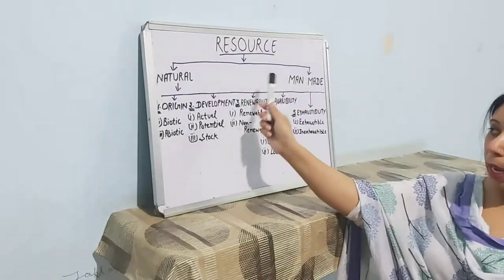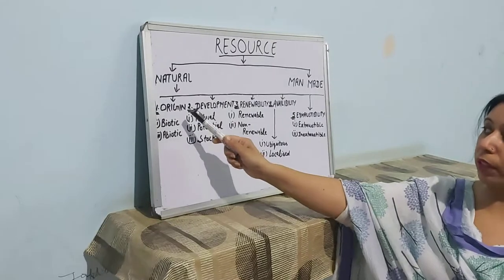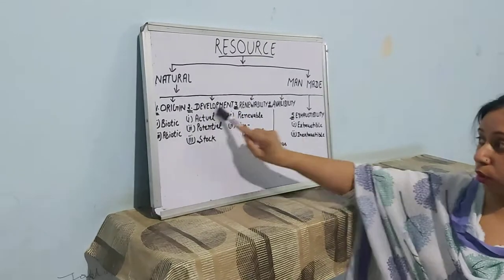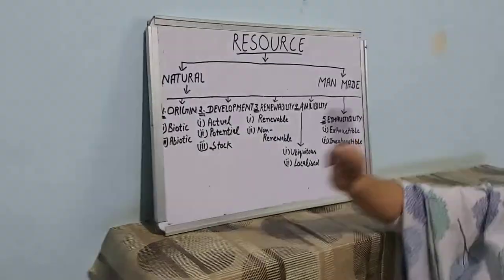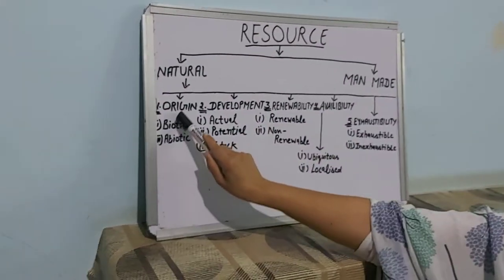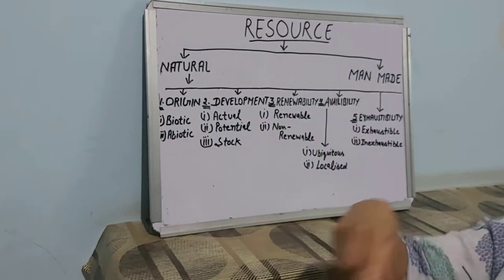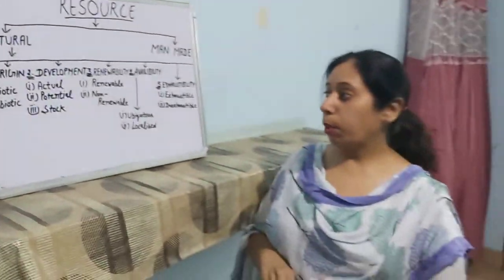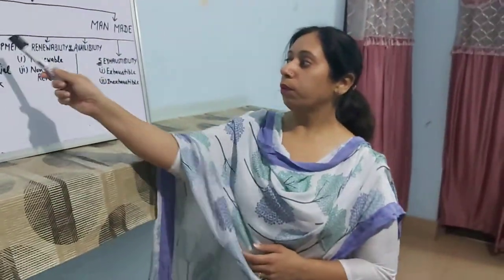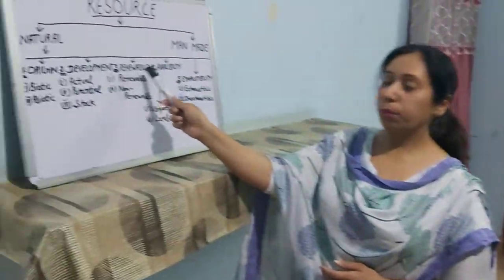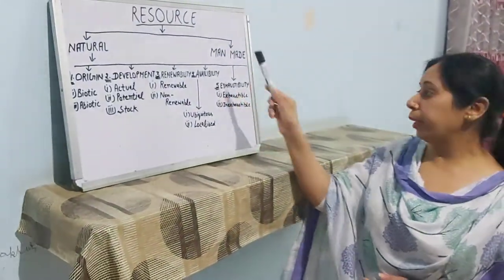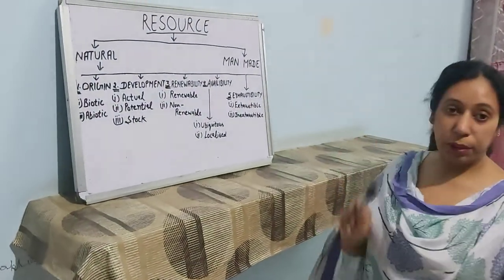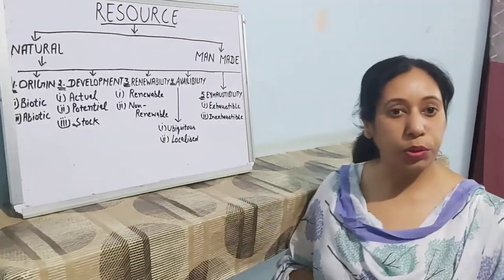So students, today I explained different types of resources, different categories of natural resources, and different types based on origin. In the next video, I will tell you about the different types of development, renewability, availability, and exhaustibility. Thank you.